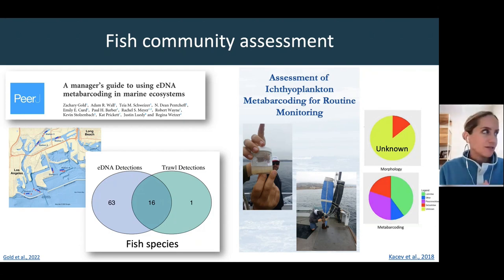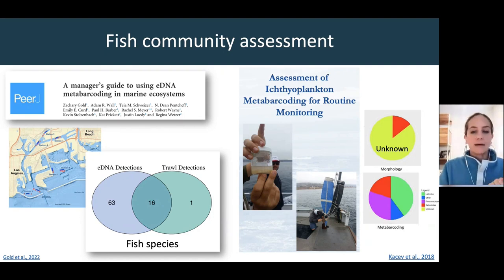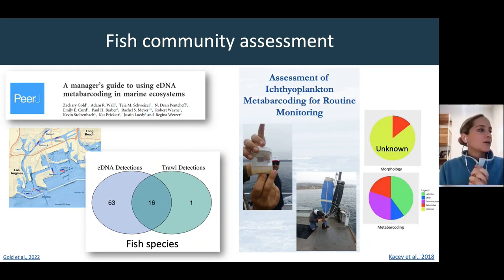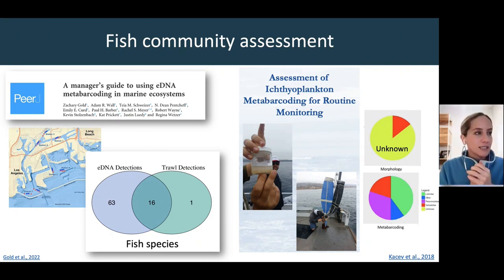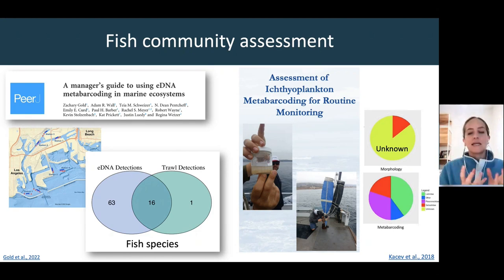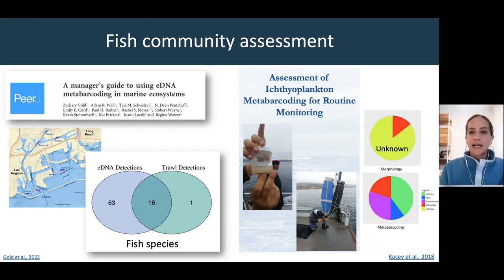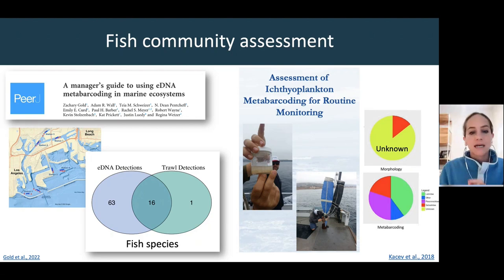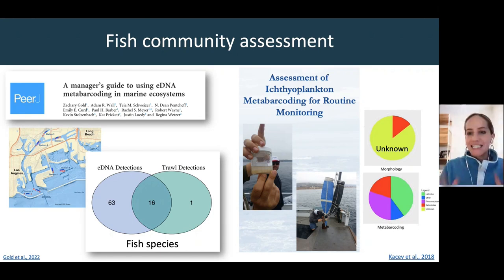Ichthyoplankton taxa can be really difficult to discriminate using traditional microscopy. In a study led by Davi Kasev, they collected trawling samples, homogenized them, and sequenced them using DNA-based approaches. The pie chart shows that previously, because these ichthyoplankton taxa are so difficult to identify, the majority of species were unknown — we couldn't assign a species name to them. When they used a DNA metabarcoding approach, they were able to begin assigning species, genus, or family level assignments to those taxa that were previously unidentified.